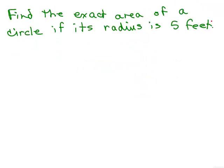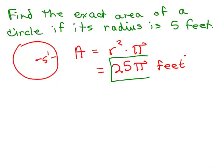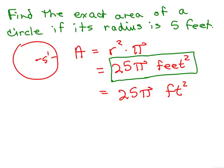So let's do this problem: find the exact area of a circle if its radius is 5 feet. We just did the circumference — now we're going to do the area. So you've got the circle again, and it's 5 feet for the radius. The area is r squared times pi. What's r squared? It's the radius times itself: 5 times 5 is 25, so the area is 25π. That is the exact area, and in this case the units are feet squared because we're talking about area — you might write it as ft² or as square feet.